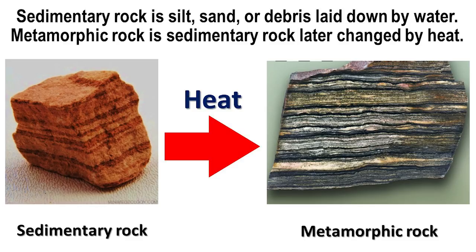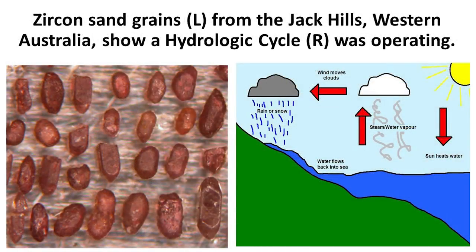Sedimentary rock is silt, sand, debris or sediments that have been laid down by water and cemented. This sedimentary rock was later changed into a different type of rock by heat. Because the rock was changed or metamorphosed, it is called metamorphic rock. There is no doubt that these earliest rocks dated on Earth were originally laid down in water before they were changed by heat.